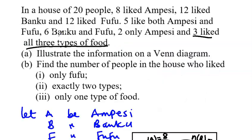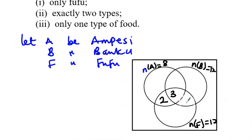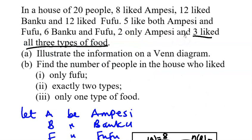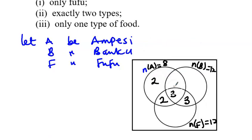Next, 6 like both Banku and Fufu. This whole region includes the centre value of 3, so Banku and Fufu only is 6 minus 3, which equals 3. Also, 2 like only Ampesi. Now we label the unknown regions: the Ampesi-only region as x, the Banku-only region as y, and the Fufu-only region as z.